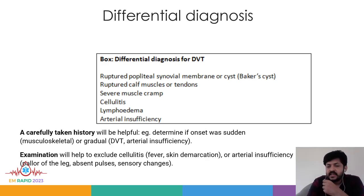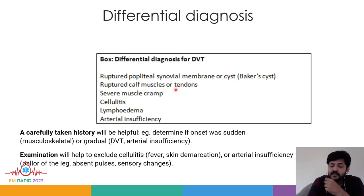Moving on to the differential diagnosis for Deep Vein Thrombosis — any patient coming to the emergency department with lower limb pain and swelling, always rule out DVT first. Other differentials to consider are ruptured popliteal synovial membrane cyst (Baker's cyst), ruptured calf muscles or tendons, severe muscle cramps, cellulitis — important because that can cause sepsis — lymphedema, arterial insufficiency causing acute limb ischemia, and even myositis or superficial thrombophlebitis.